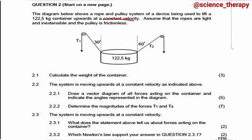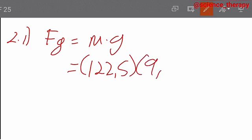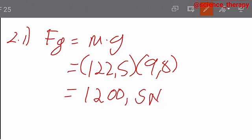You will remember to calculate the weight of the container, we have the formula Fg equals the mass times the gravitational acceleration. Now what is the mass? We say the mass is 122.5 and the gravitational acceleration is 9.8. Now multiplying that with your calculator, you have 1200.5 newtons. So don't forget the SI unit for your gravitational force. That's newtons.